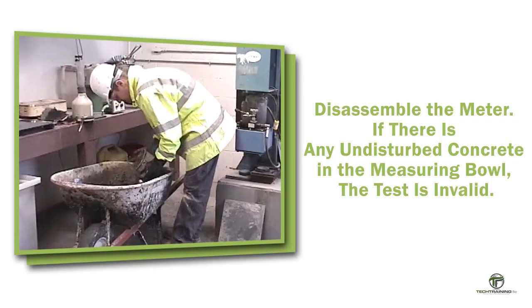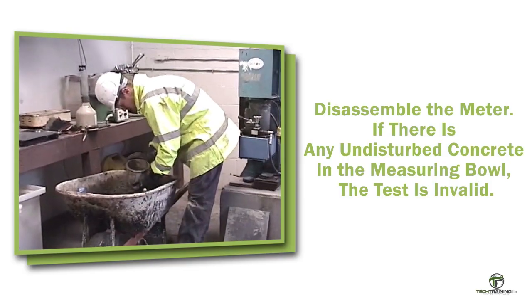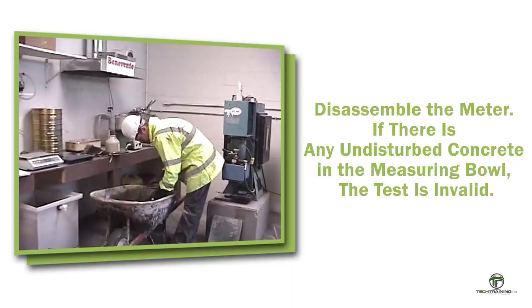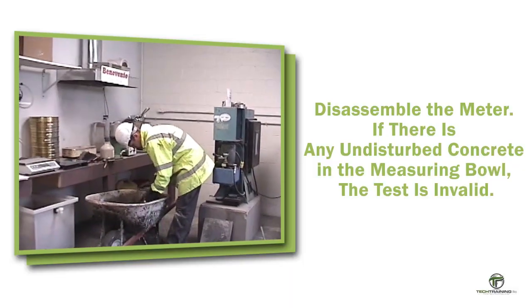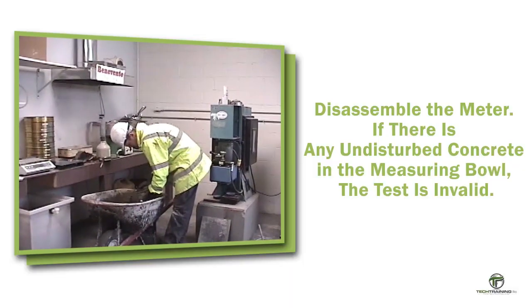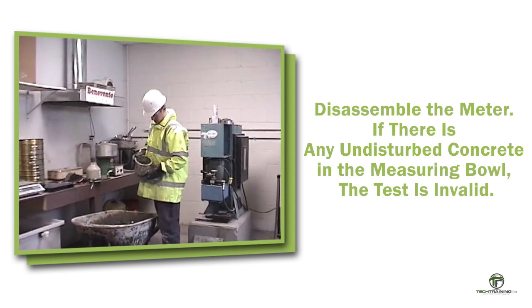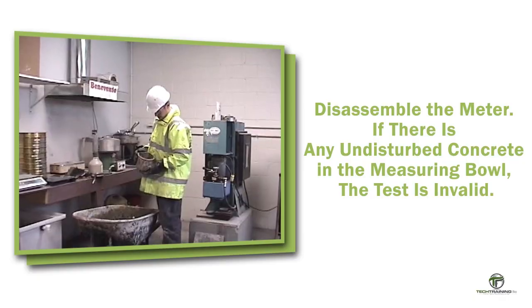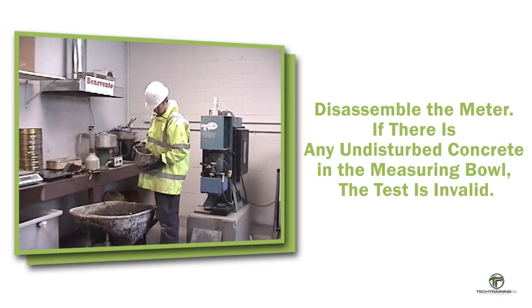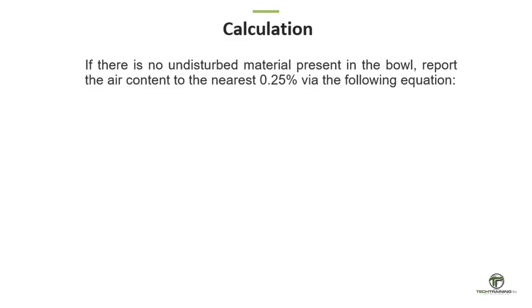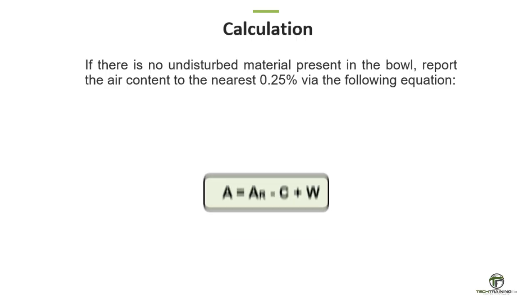Disassemble the air meter by detaching the top section from the measuring bowl. Allow the liquid to discharge and dump the contents of the measuring bowl. Examine the interior of the measuring bowl to ensure there are no portions of undisturbed, tightly packed concrete present. If portions of undisturbed concrete are found, the test is invalid. If no undisturbed material is present, report the air content to the nearest 0.25%.